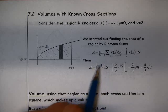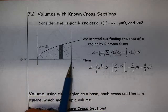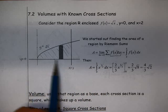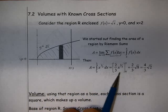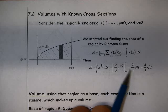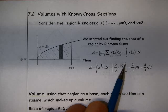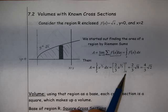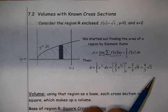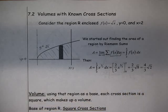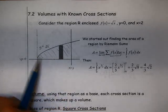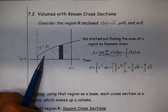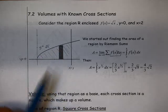We get this definite integral. We're going to integrate from x equals 0 to x equals 2 the square root of x. It's a pretty easy anti-derivative. We evaluate that at x equals 2 and at x equals 0, subtract those, simplify, and we get 4/3 times the square root of 2. That represents the two-dimensional area here in region R.